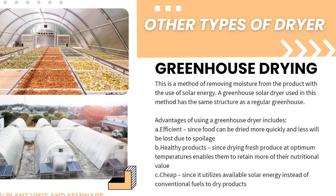Greenhouse drying is a method of removing moisture from the product using solar energy. A greenhouse solar dryer has the same structure as a regular greenhouse. Its advantages include efficiency — food can be dried more quickly with less spoilage loss — and it produces healthier products, since drying fresh produce at optimum temperatures enables them to retain more of their nutritional value. It is also cheap, since it utilizes available solar energy instead of conventional fuels.